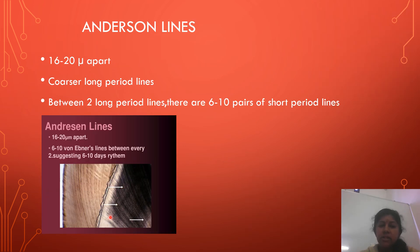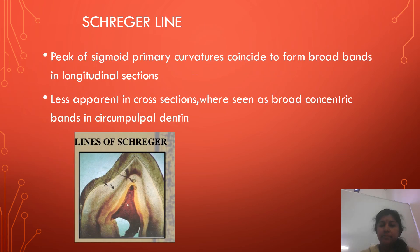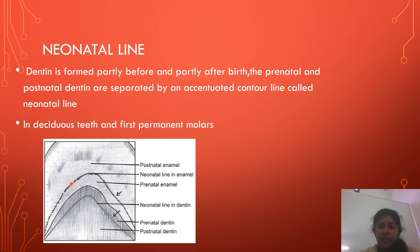Andresen lines are 16 to 20 micrometers apart and are coarser, long-period lines. Between two long-period lines, there are 6 to 10 pairs of short-period lines. Contour lines of Owen are accentuated von Ebner's lines due to disturbance in the matrix and mineralization process. Schreger lines are formed where peaks of primary curvatures coincide to form broad bands in longitudinal sections; they appear as broad concentric bands in circumpulpal dentine.